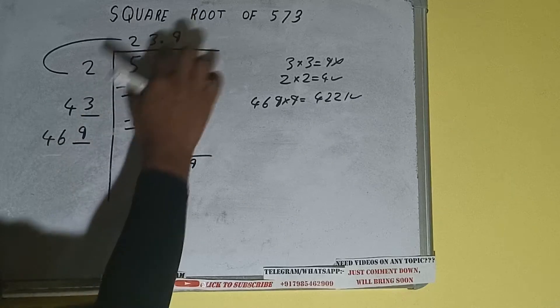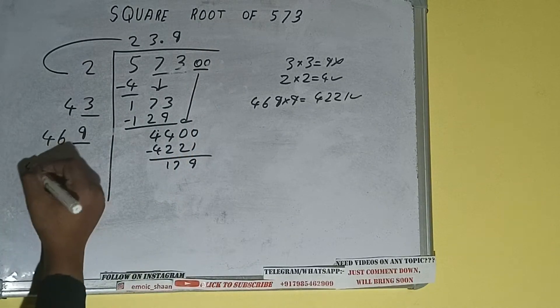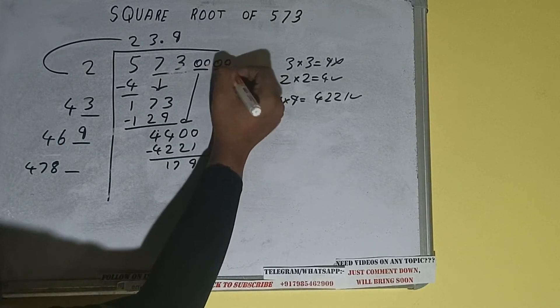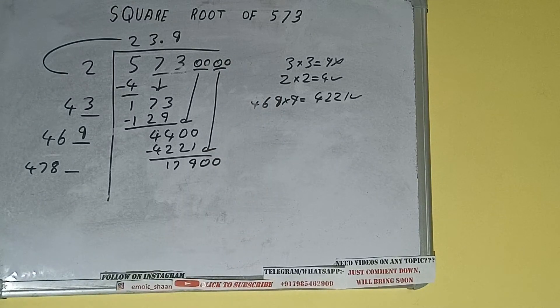Now 469 into 9 we did, so add both. 469 plus 9 will be 478 and one digit extra. And this number we need to make it big. So bring the next pair of zeros down and it will be 17900.